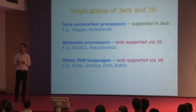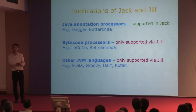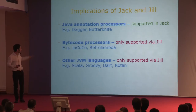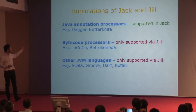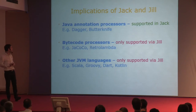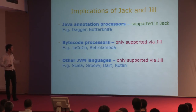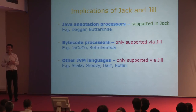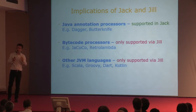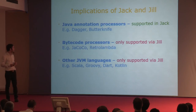On the other hand, if you have processors that work on bytecode, you'll have to go through Jill, because only Jill understands bytecode—for instance, the Java code coverage tool or RetroLambda. Or if you're using other languages from the Java ecosystem, these typically compile to Java bytecode, so you'll need this additional step in your build process.